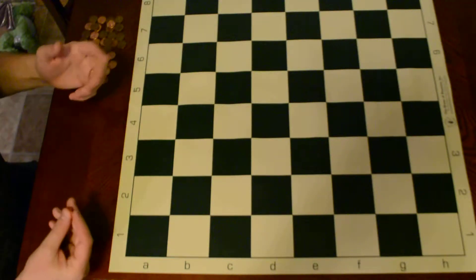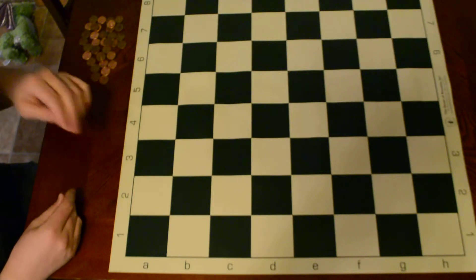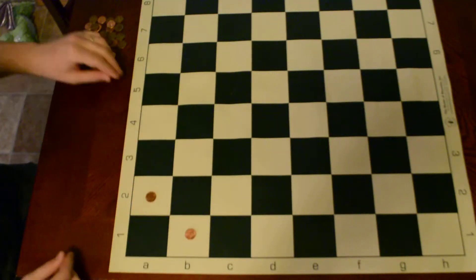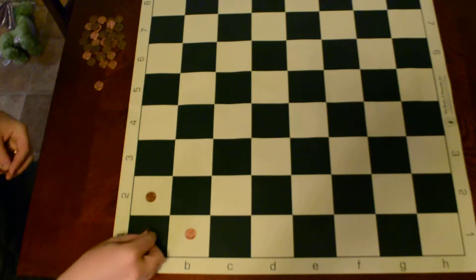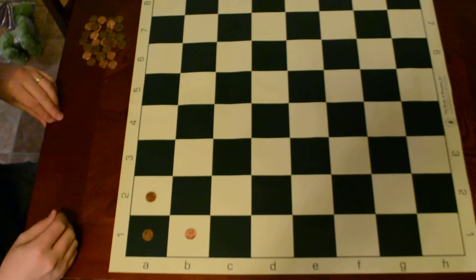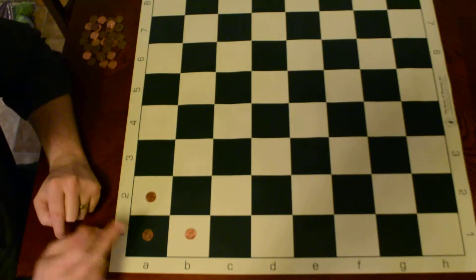But here's basically how it works. There's gonna be a set configuration. Let's just say in the bottom left here you've got three pennies. And how you do it is you choose one.